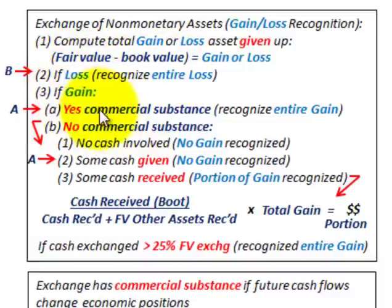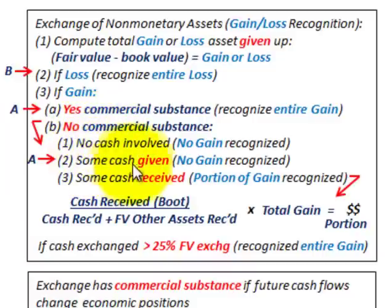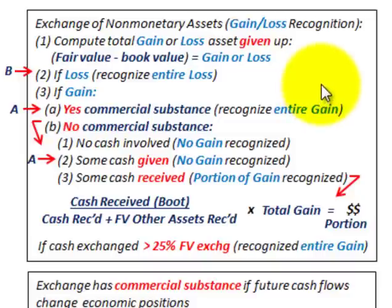We're going to be looking at both the difference here between if there is commercial substance involved, where we'd recognize the entire gain, and if there's no commercial substance involved, we're going to look at the case where some cash is given, then no gain would be recognized. But these are the rules that you have to follow here. So let's go and look at our problem that we're going to be going through.